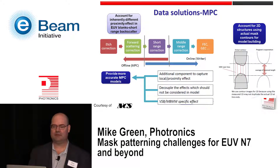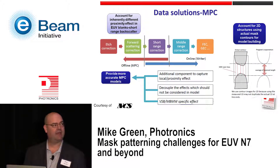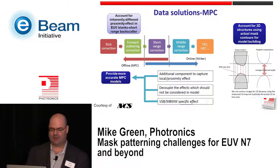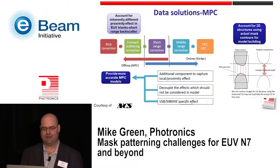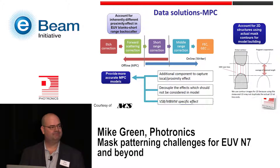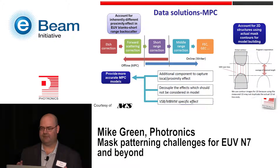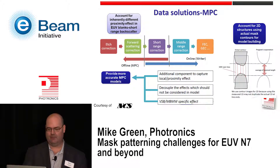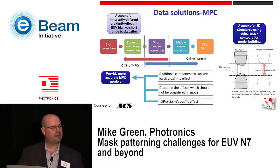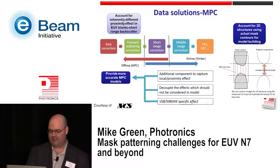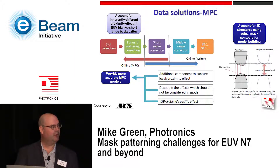There's also a data component: specifically mask process error correction. These slides are courtesy of our friends at NCS. For the EUV space, NCS is going to focus on accounting for the inherent difference in proximity effect between the ArF and EUV blank, specifically the short-range backscatter. They believe this will be a two-pronged approach: continuing proximity effect correction inside the e-beam tool on a broad mesh, and then on a finer mesh with MPC software completing that correction. The other aspect is to account for 2D structures — using mask contours for these 2D structures to feed into the mask model, so all these things come together to provide a more accurate MPC model.